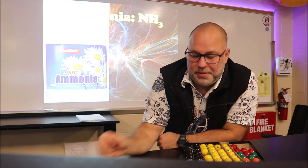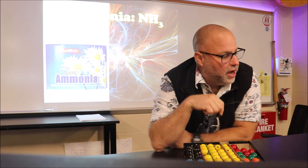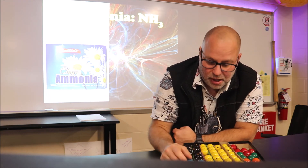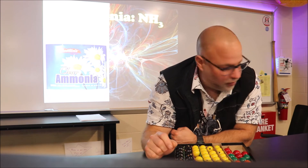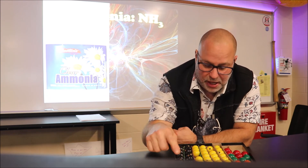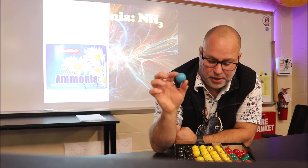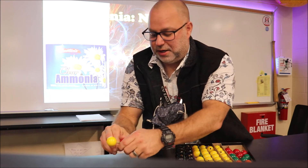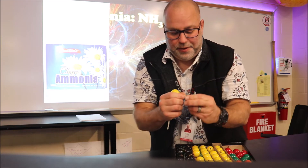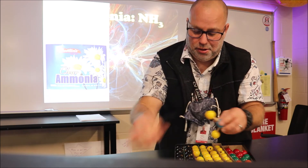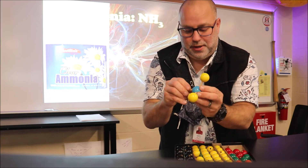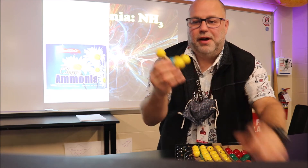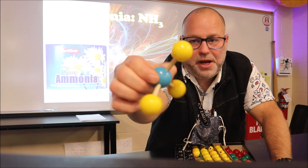The next one we want to make is ammonia — NH3. For NH3, we need one nitrogen, which is this lovely blue color. Then H3 means three hydrogens. We can steal from the hydrogen pile here, put one, two, and then we need another one — three hydrogens right in there. That's going to be our ammonia molecule.